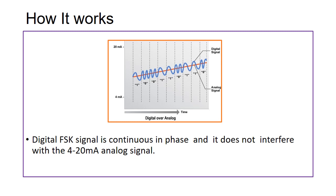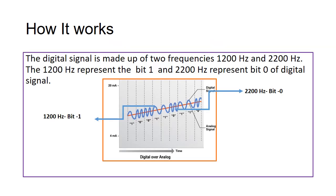HART protocol works by using frequency shift keying (FSK) standard to superimpose digital signals onto the 4 to 20 milliampere analog signal. The digital FSK signal is continuous in phase and does not interfere with the 4 to 20 milliampere analog signal. The digital signal superimposed on the analog signal is made up of two frequencies: 1200 Hz representing bit 1, and 2200 Hz representing bit 0.